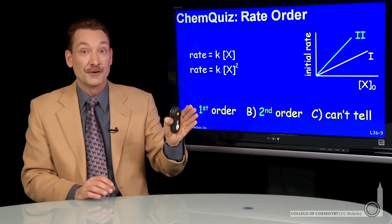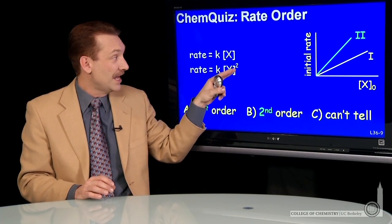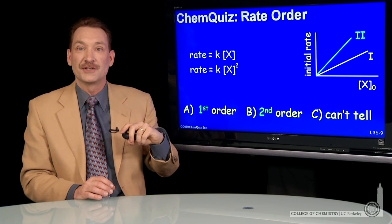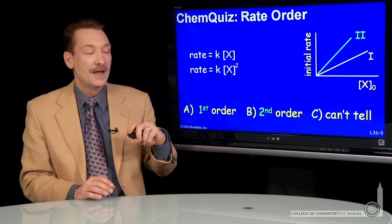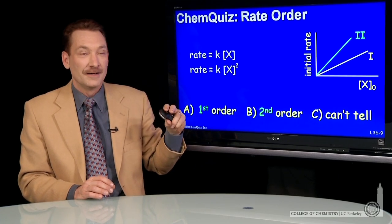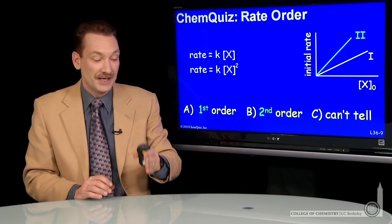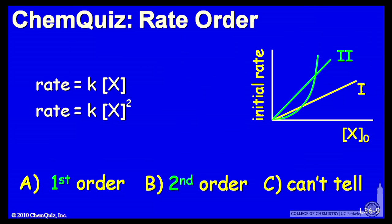If it were a second order reaction, a second order reaction has overall powers add to 2. In this case, there's just a single power of 2. So a second order rate, if I measured the initial rate versus the initial concentration in a series of experiments like I described, you would find that there's a quadratic relationship.